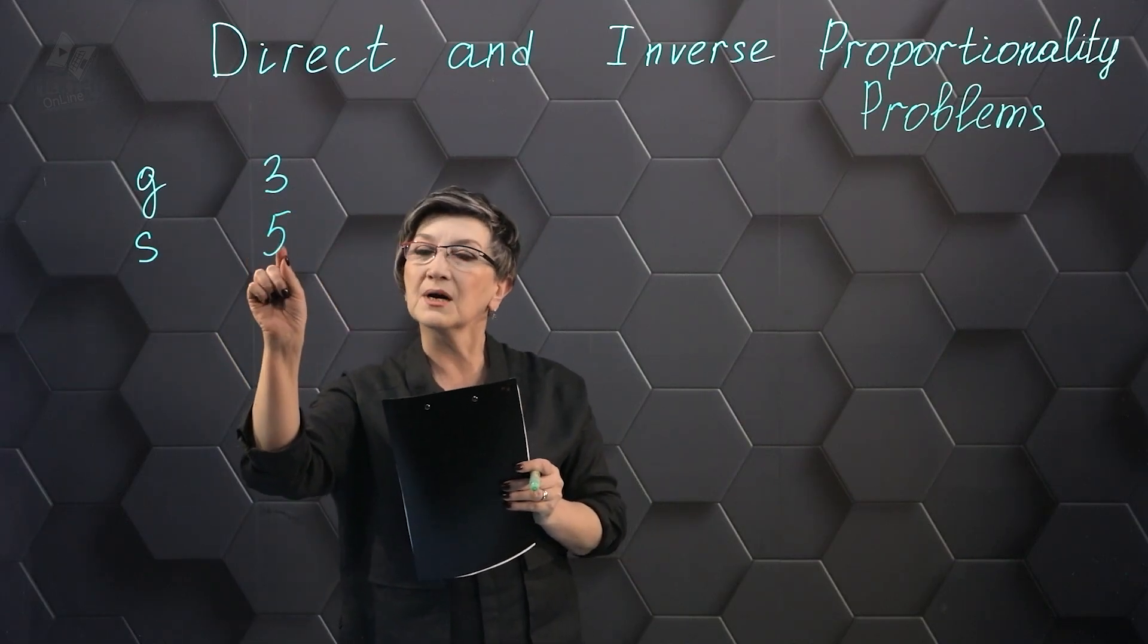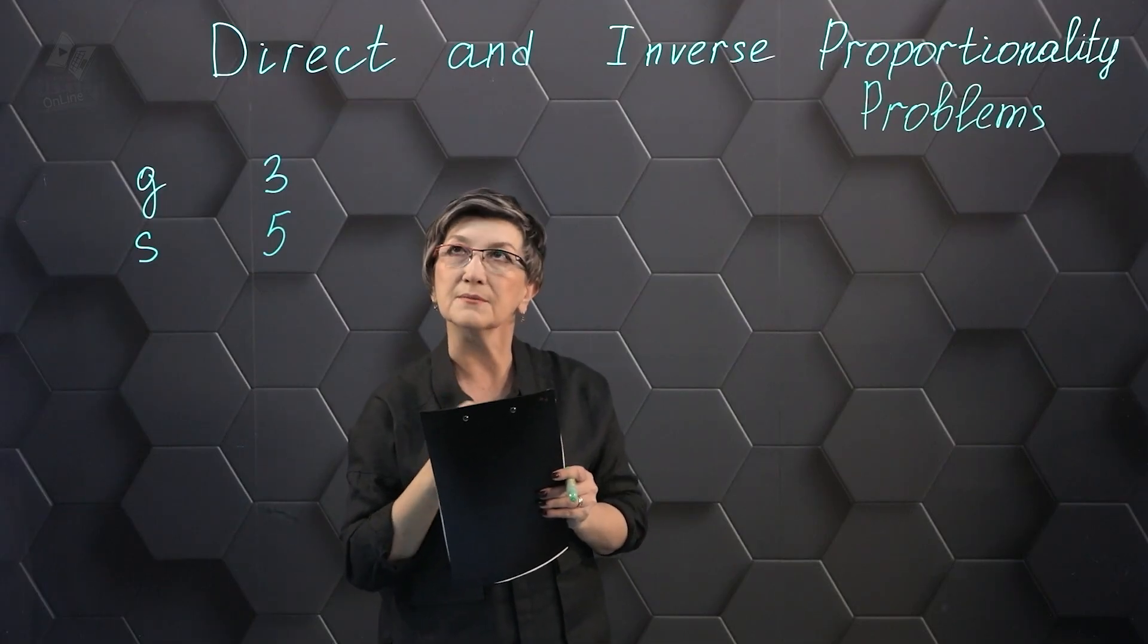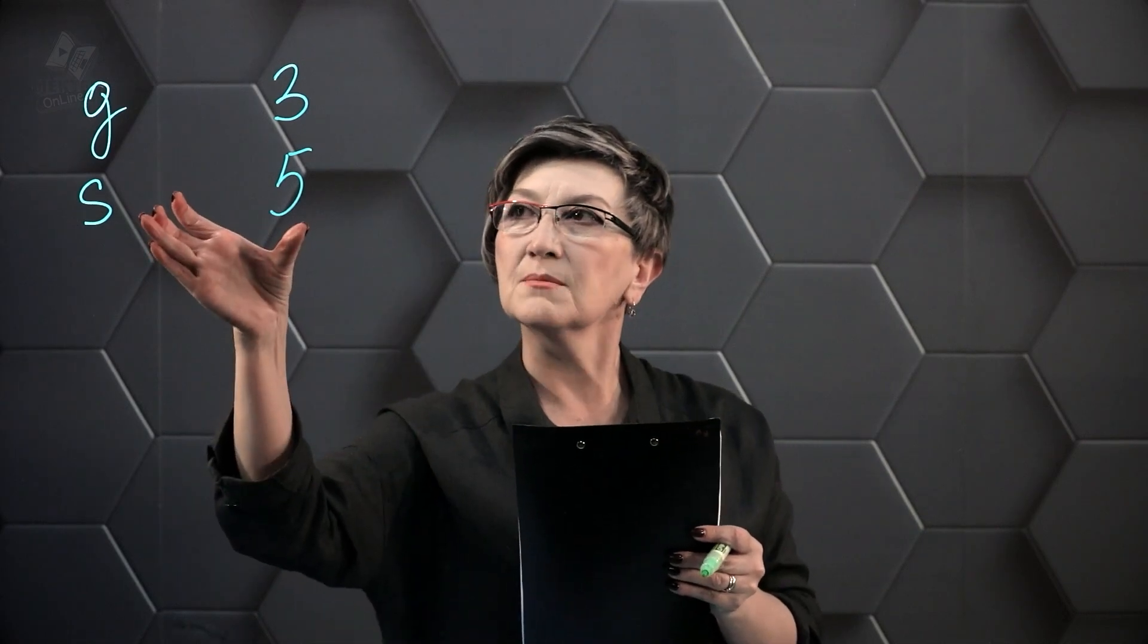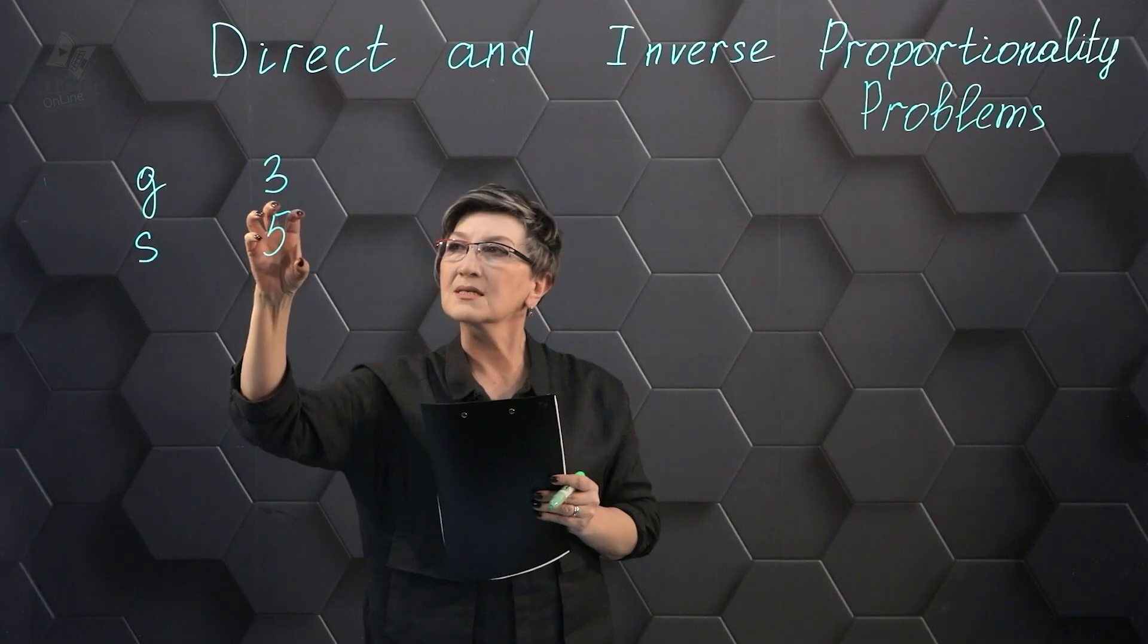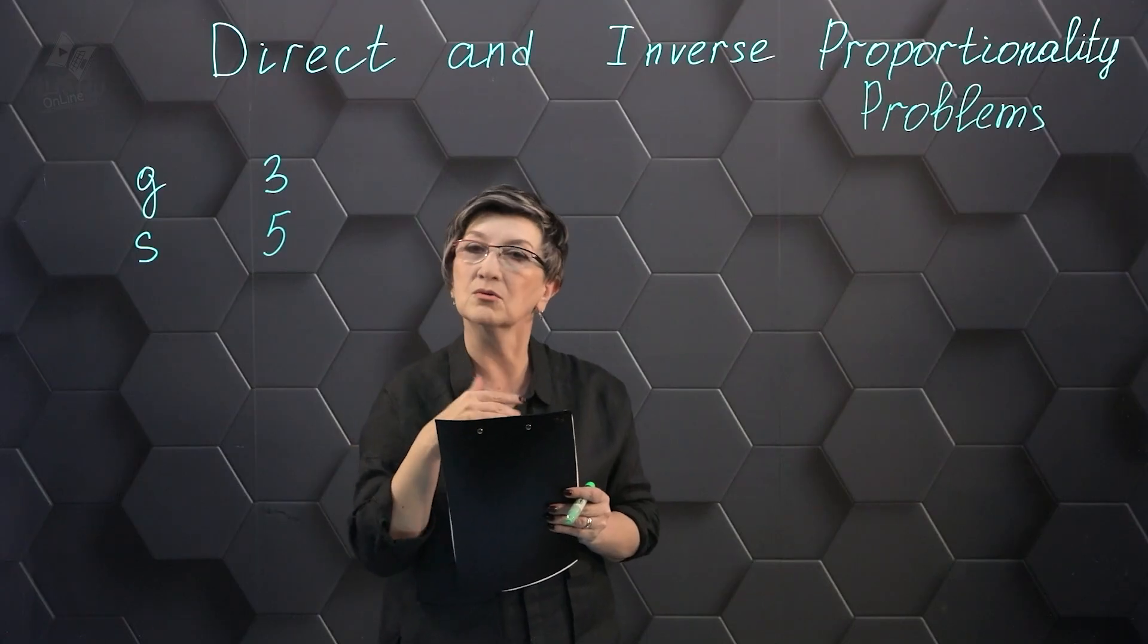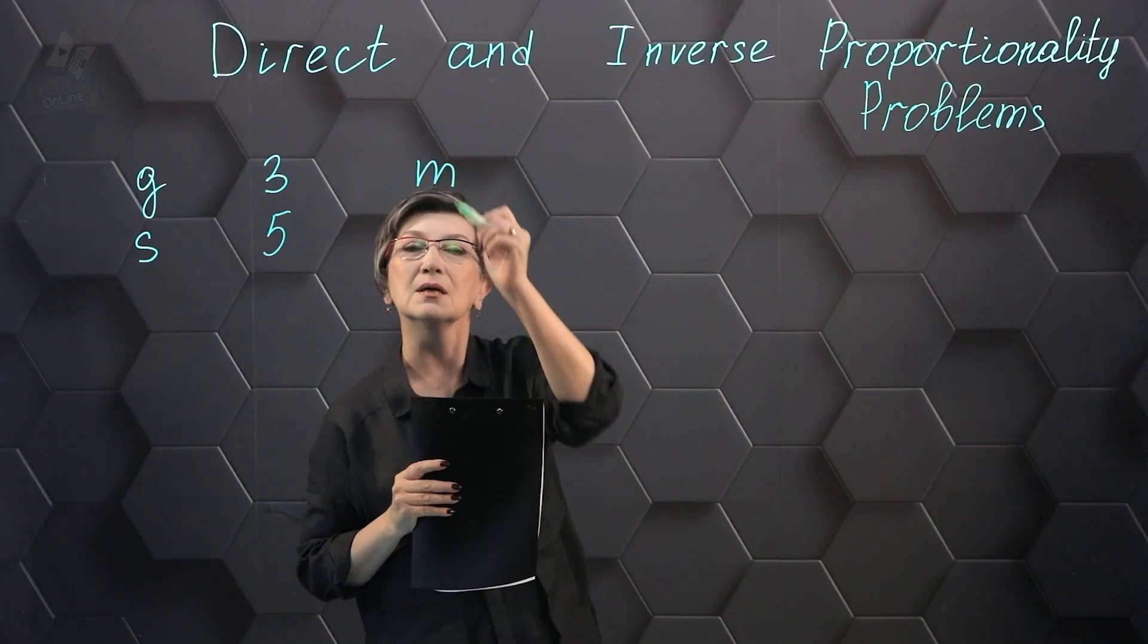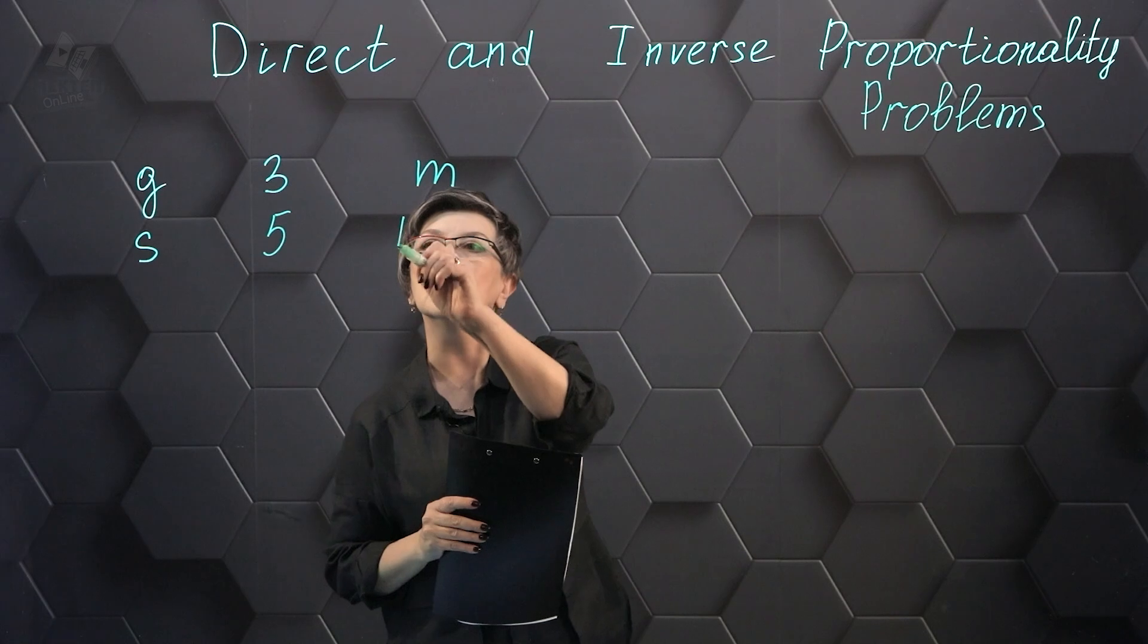The mass of silver is 12 grams more than the mass of gold. So how do we write this down? If the condition says that the mass of silver is 12 grams more than the mass of gold, then neither the mass of silver nor the mass of gold is known to us. But we are told that the mass of silver is 12 grams greater than the mass of gold. But we don't know the mass of gold. So we denote the mass of gold by M. Then the mass of silver is 12 grams greater, M plus 12.